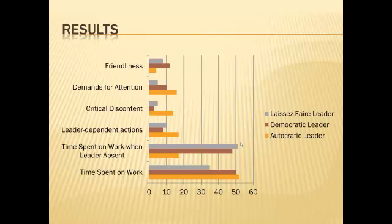So what did Lewin, Lippitt, and White find? The yellow bar represents autocratic leader groups, the burgundy bar represents democratic leader groups, and the blue bar represents laissez-faire leader groups. Looking at time spent on work, the most productive groups were the autocratic leader groups — which may or may not be surprising, since if someone is watching you carefully and telling you exactly what to do, it makes sense they'd be more productive. The autocratic and democratic groups were both much more productive than the laissez-faire group.